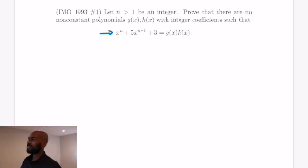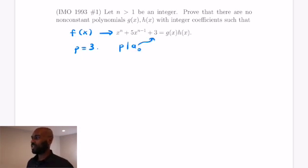So the problem asks, given this polynomial x^n + 5*x^(n-1) + 3, prove it can't be factored into the product of two non-constant polynomials with integer coefficients. So we're going to use the prime 3, which is the constant coefficient here. So 3 divides the constant coefficient, and it actually divides a bunch of the intermediate terms, a_1 all the way to a_(n-2), because all of these terms are actually 0.